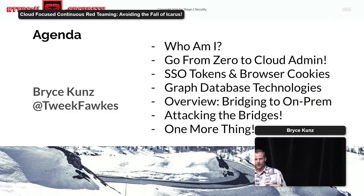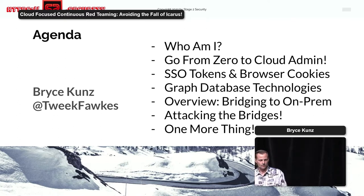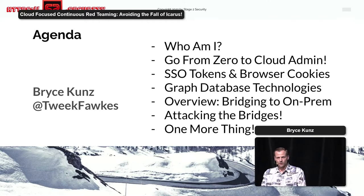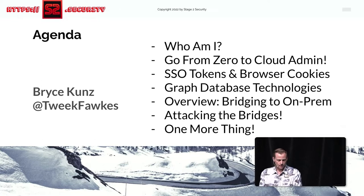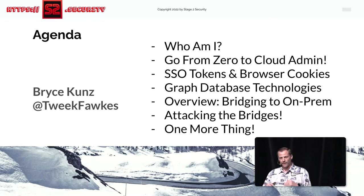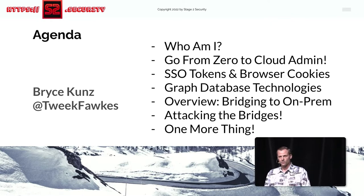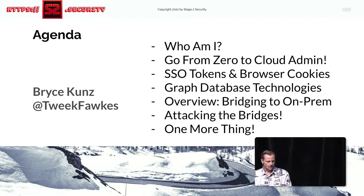Here's a brief agenda of what's going to be covered in this talk. I'll talk briefly about who I am, then about how you go from nothing to being the admin over a cloud environment. I'll touch on SSL token stealing and browser cookie stealing, which other talks at this con have been discussing. Then we'll dive into graph database technologies to help you map out attack vectors inside AWS, Azure, and GCP environments. And if we have time, some use cases on how cloud infrastructure gets bridged with on-prem and where the weak points are. I've got one thing at the end that should be pretty cool.